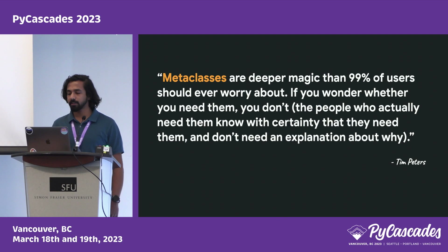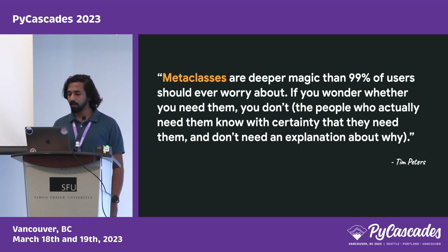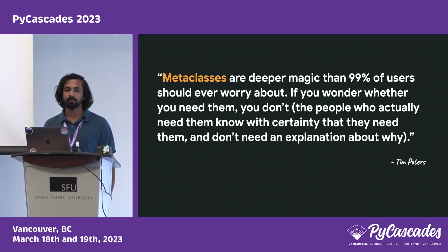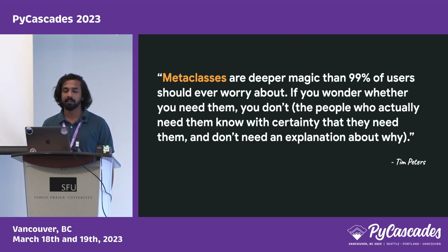This is a classic quote by Tim Peters: 'Metaclasses are deeper magic which 99% of users should not worry about.' Most metaclass use cases are already solved by alternatives. We use metaclasses when we need to propagate class hierarchies. Also, PEP 487 was introduced in Python 3.6, so libraries needing compatibility with multiple Python versions may still need to use metaclasses.